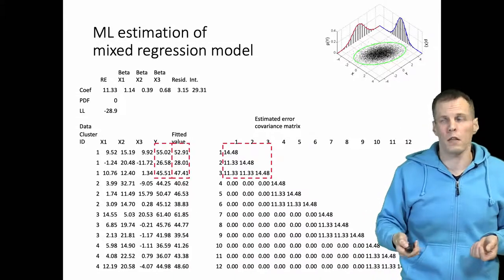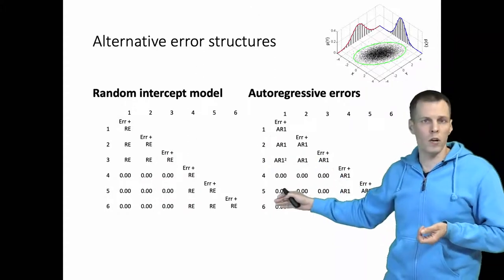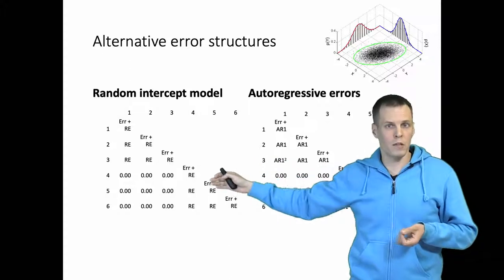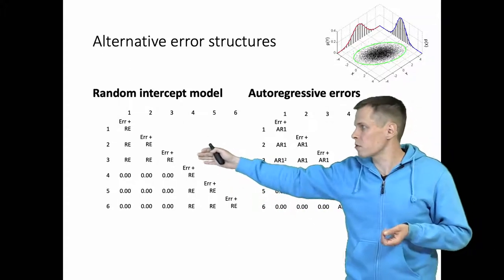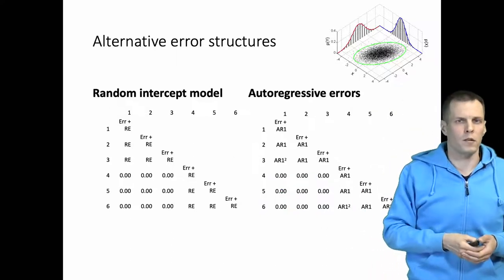We can also specify other things. So this is the random intercept model. The idea is that the diagonal is the error variance plus the random effect, random intercept which affects all observations of the same cluster. But that's not the only thing that we can do.